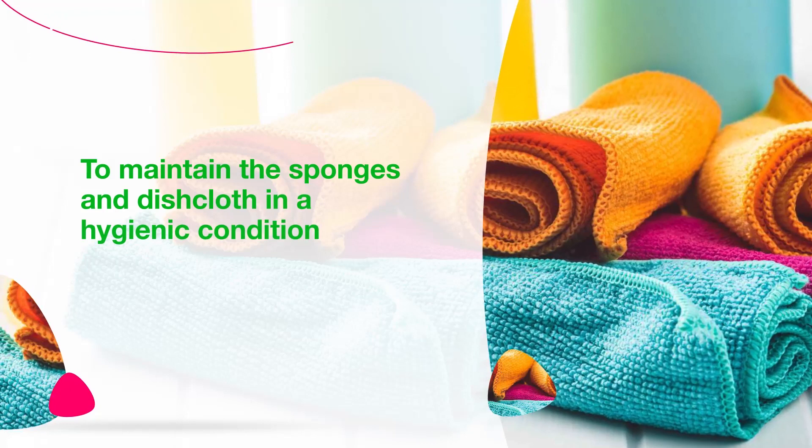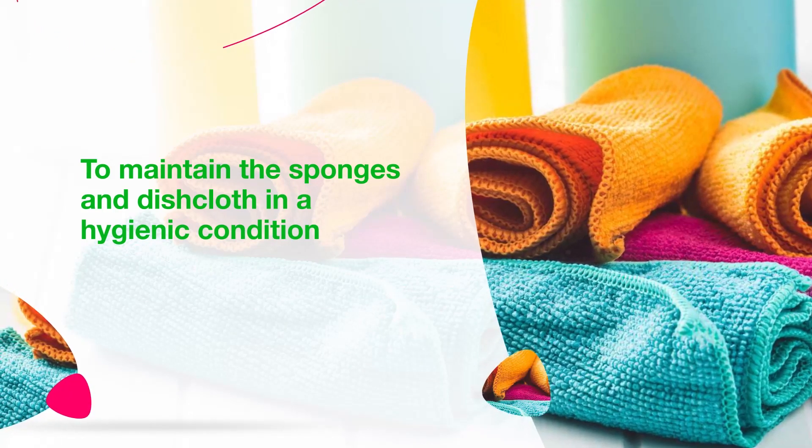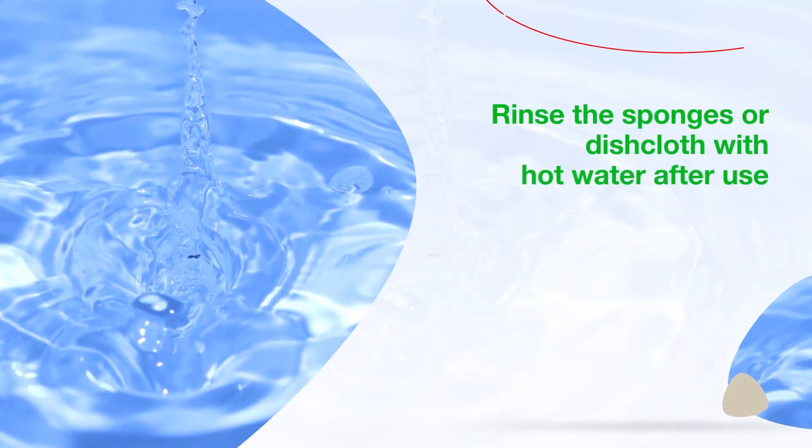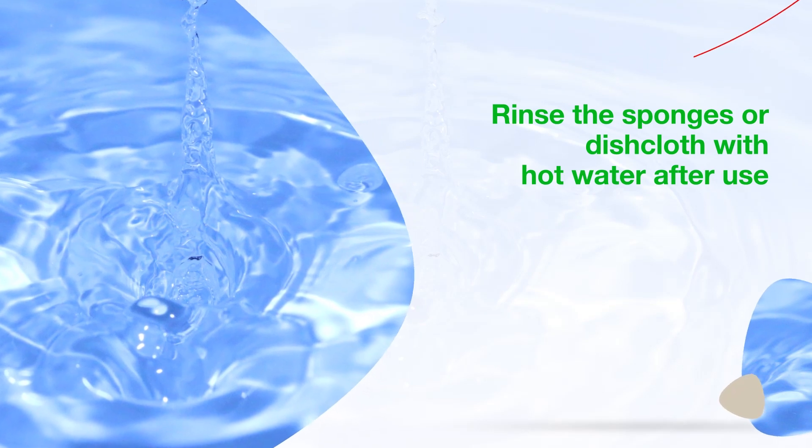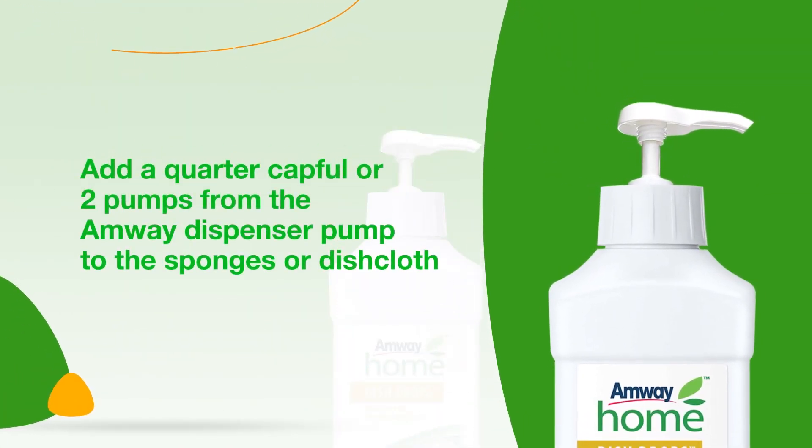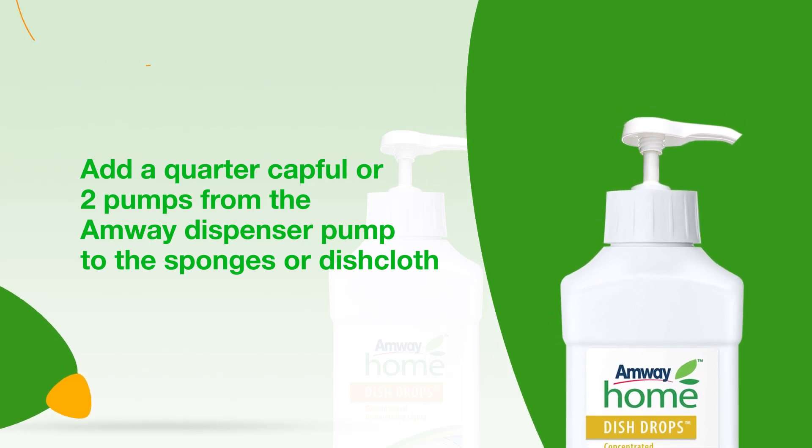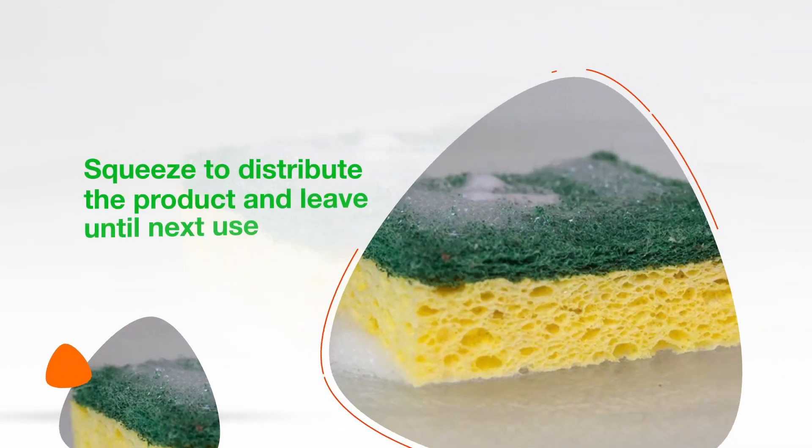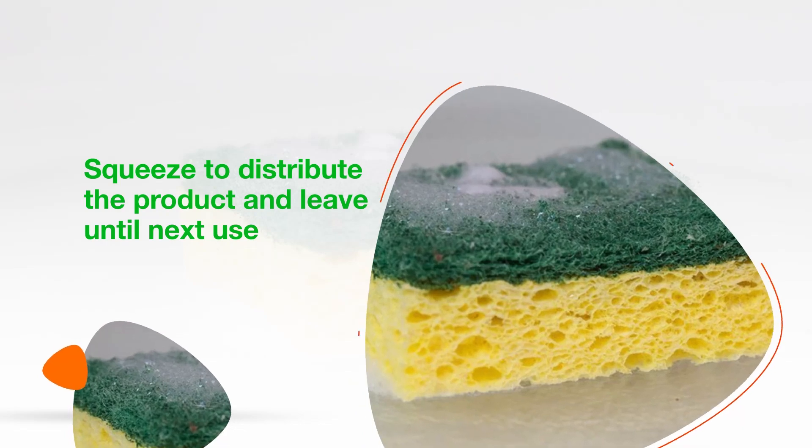To maintain the sponges and dishcloth in a hygienic condition, rinse them with hot water after use. Add a quarter capful or two pumps from the Amway Dispenser pump to the sponges or dishcloth. Squeeze to distribute the product and leave until next use.